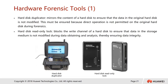Forensic tools include hardware and software tools. One hardware example is the hard disk duplicator — you put in the original drive and a blank hard disk, then start duplicating. The function of this tool is to mirror the content of the hard disk to ensure the data is not modified, because write operations are not permitted on the original hard disk during forensics.